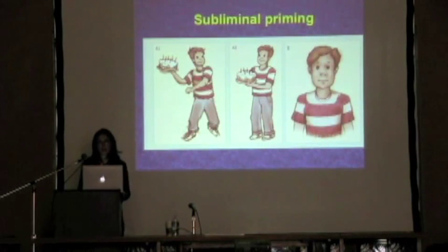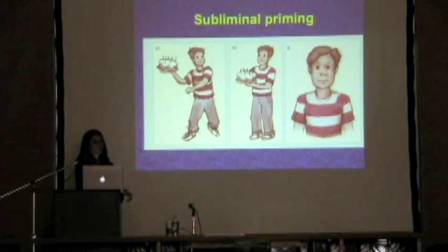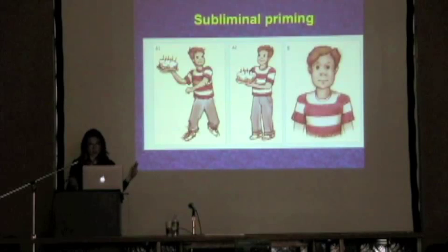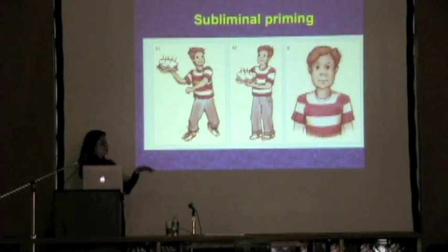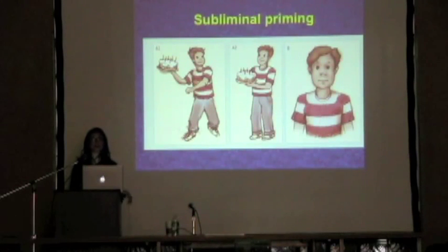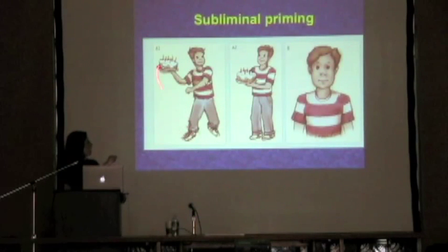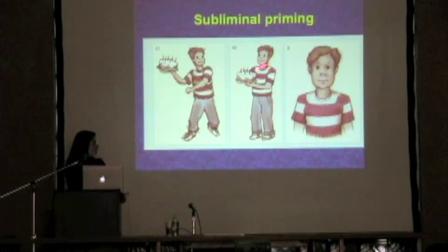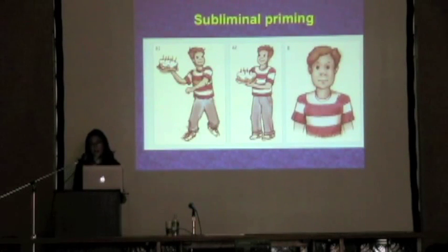Another example done in the lab: they showed very quickly — flashing either a positive or negative image — so the person says they don't see anything. Then, supraluminally, so the person is aware of it, they show a neutral image of a boy and ask them to rate adjectives about this boy. If they saw the negative image beforehand, they'll rate him as much more negative, and if they saw the positive image, as more positive. This is happening at a very high level of processing — you can't call it a dumb unconscious.